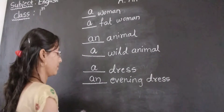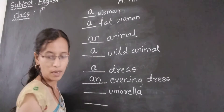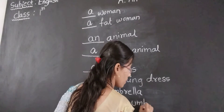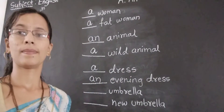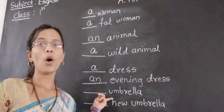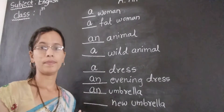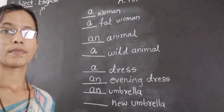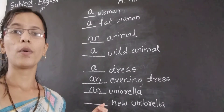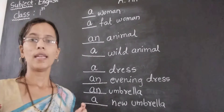Last one: umbrella, new umbrella. Umbrella — U is there, U means that is a vowel sound. AN umbrella. New umbrella — N means that is a consonant sound. Beginning of consonant, we have to use A. A new umbrella.